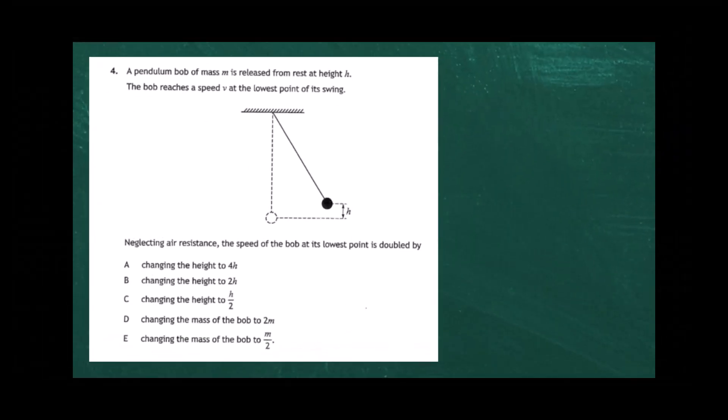Question 4 from paper 1 of the 2023 Higher Physics examination from the SQA. A pendulum bob of mass m is released from rest at height h. The bob reaches speed v at the lowest point of its swing. Neglecting air resistance, the speed at the lowest point is doubled by — with five choices given.